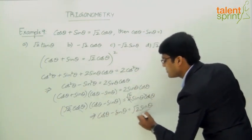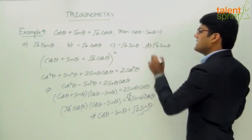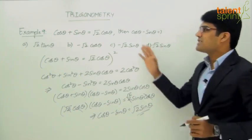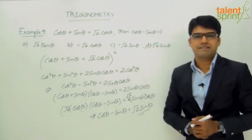We finally get cos theta minus sin theta equals root 2 sin theta, which is option B. So the correct answer for the given question is root 2 sin theta.